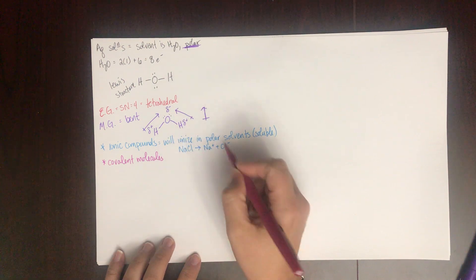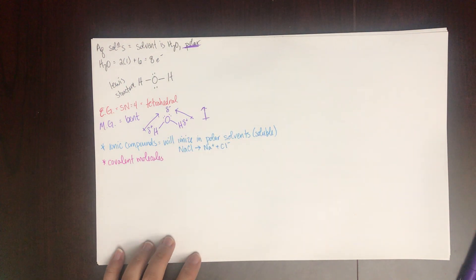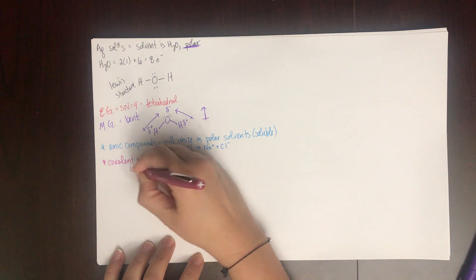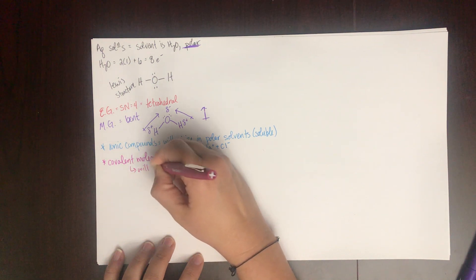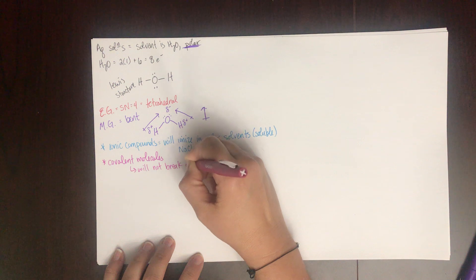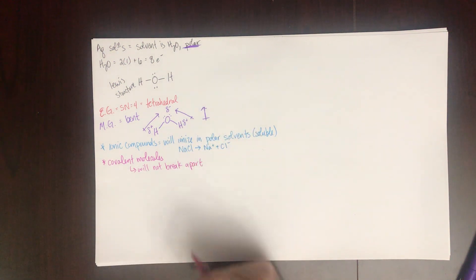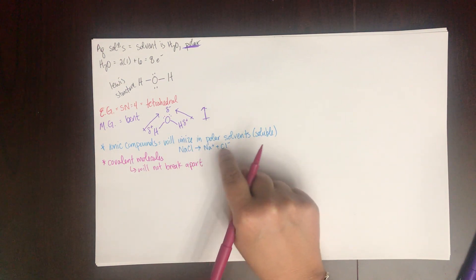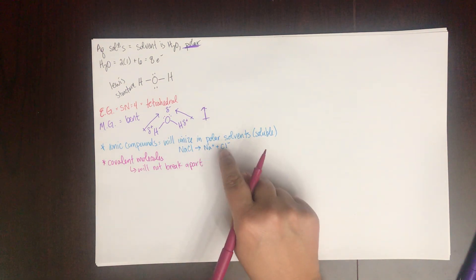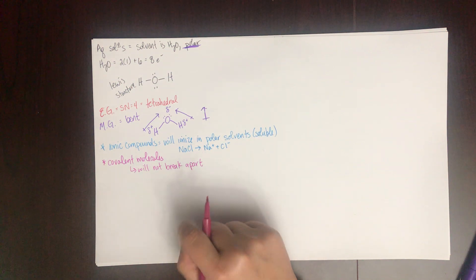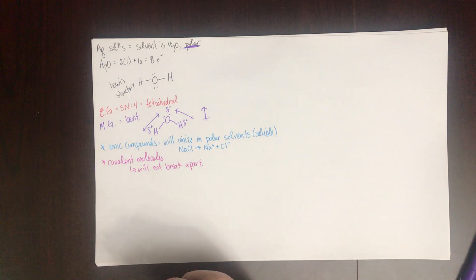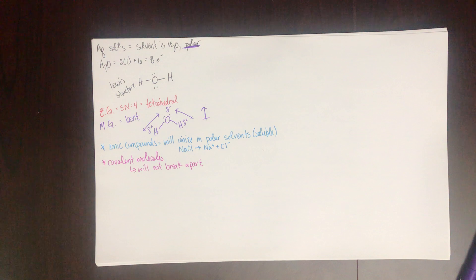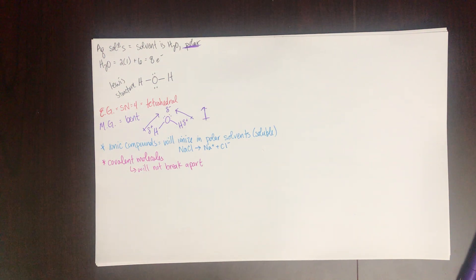Covalent molecules, because they have no charge, will not break apart. Ionic compounds will ionize — break apart into their ions; you might also hear this called dissociate. Covalent molecules will not. This leads us to the two classes of molecules we're going to talk about: electrolytes and non-electrolytes.